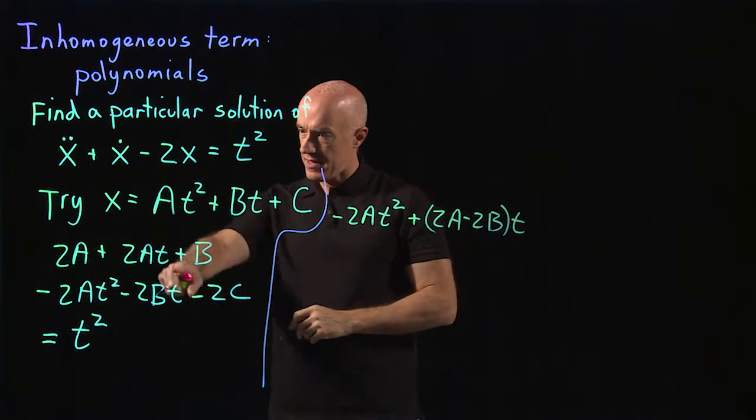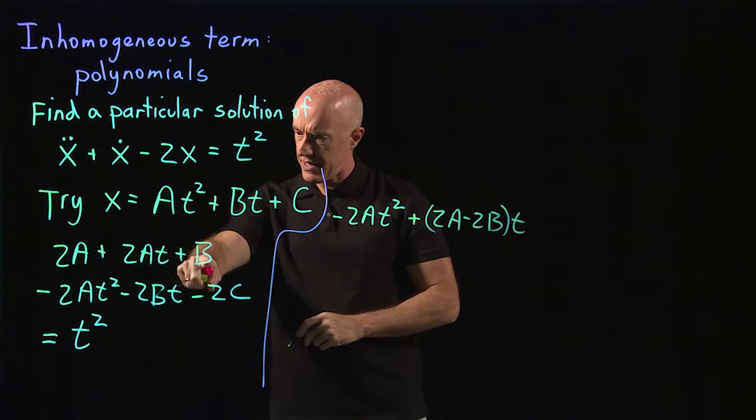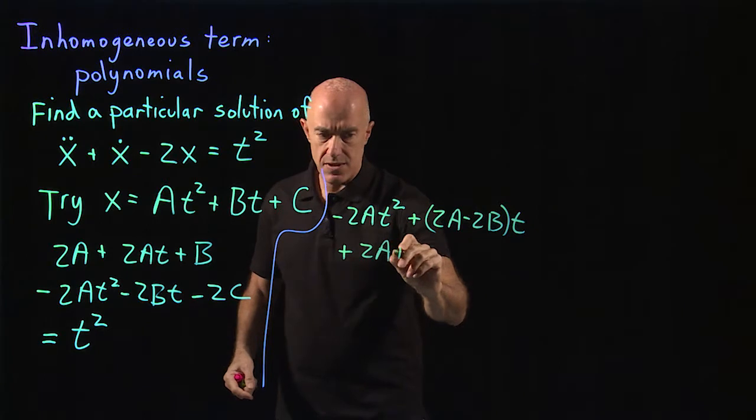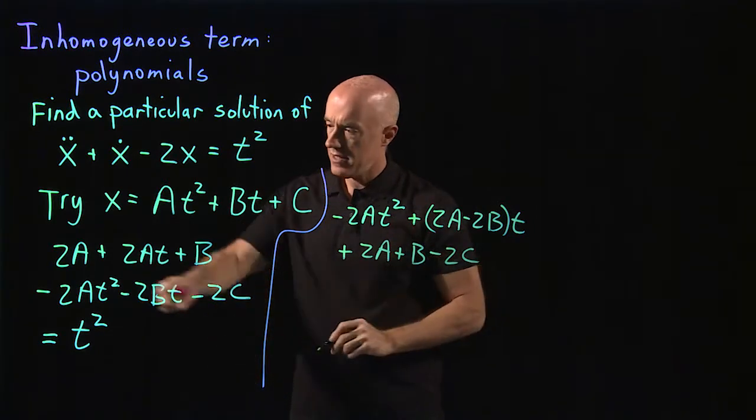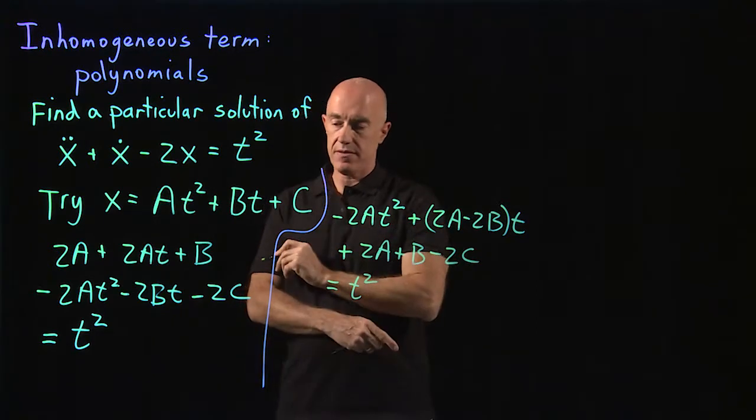And then the constant term, we have a 2a plus b minus 2c, so plus 2a plus b minus 2c. And that's equal to t squared.